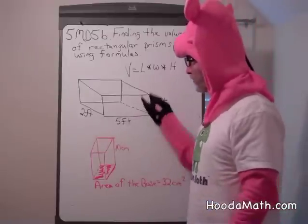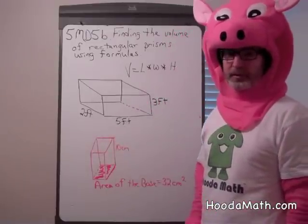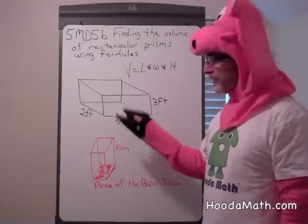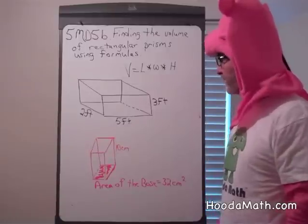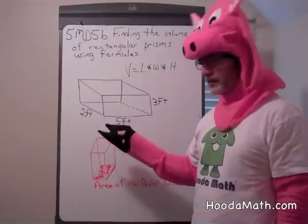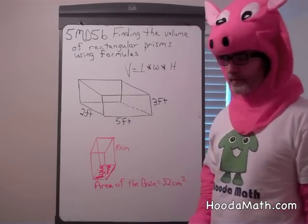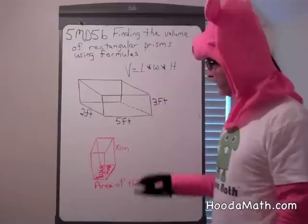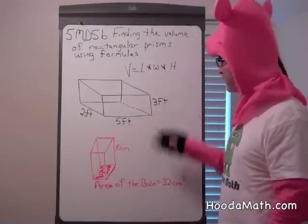In this particular one, we're trying to find the volume of a fish tank or an aquarium that you might find in your science class or at your home. The dimensions are 2 by 5 by 3 feet. The length is 2 feet, the width is 5 feet, and the height is 3 feet.